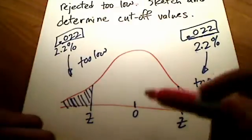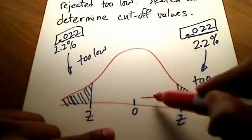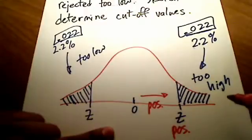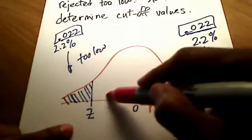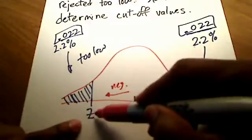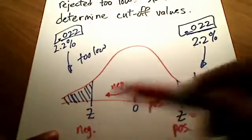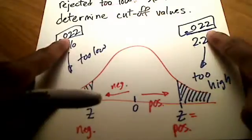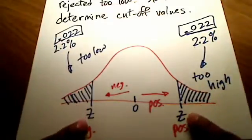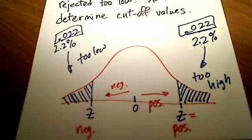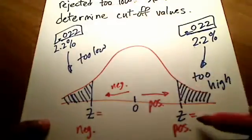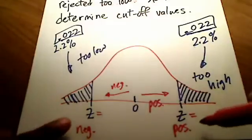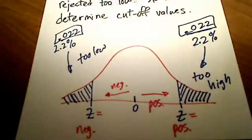Because 0 is in the middle, any number to the right of 0 is positive, so this z over here is a positive z score. Anything to the left of 0 is negative, so this corresponding z is a negative z score. But because of symmetry, and these two areas being exactly the same, these two z scores are also going to be exactly the same — the only difference is that the right-hand one is positive and the left-hand one is negative. Their absolute values are identical.